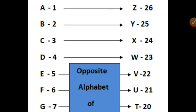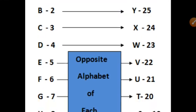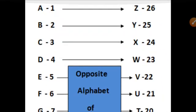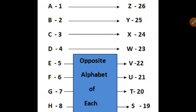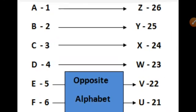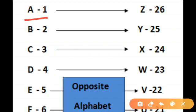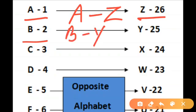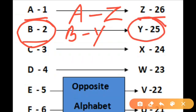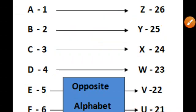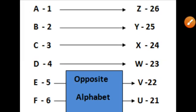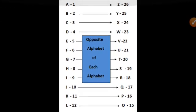B is our second alphabet, so the code for B is 2. Similarly C, D, E, F and all letters have their own code. Z is the last alphabet and has 26 as its code. You can also see the opposite alphabet of each letter — the opposite of A is Z, the opposite of B is Y because B is the second letter and Y is the second last letter of the alphabetical series. You can take a screenshot and keep it for reference.